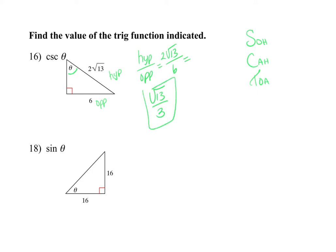Sometimes they won't give you everything. If you're looking at omega and need opposite over hypotenuse for sine but don't have the hypotenuse, use the Pythagorean theorem — that gives you 16 root 2. Or recognize it's a 45-45-90 special right triangle: sine of 45 degrees is root 2 over 2. Either way, 16 over 16 root 2 simplifies and rationalizes to root 2 over 2. Always remember: a squared plus b squared equals c squared.